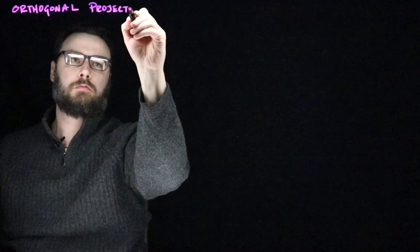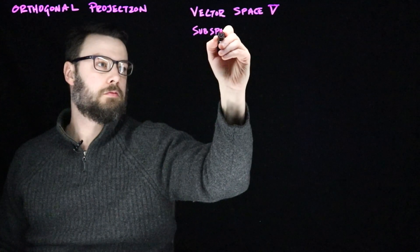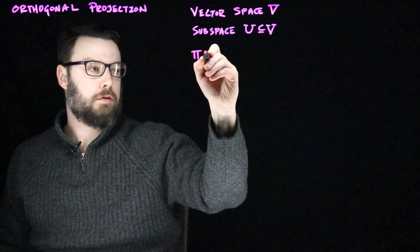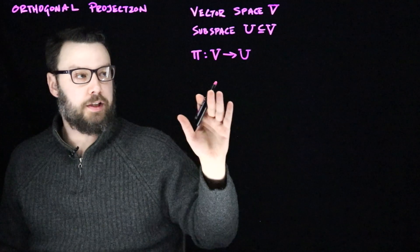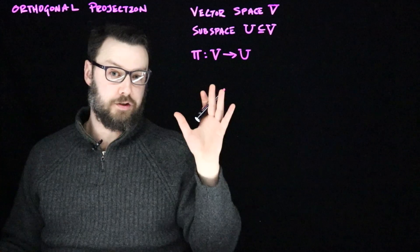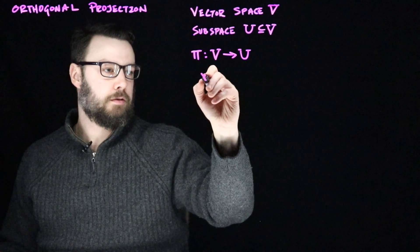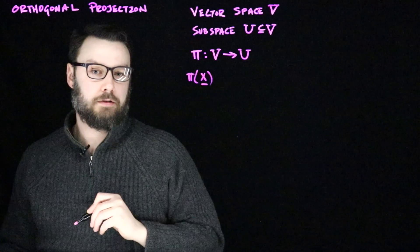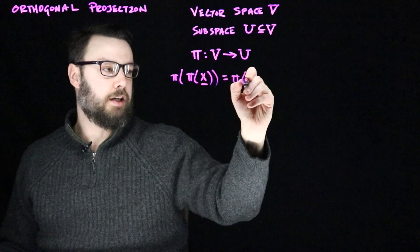Now let's talk about the idea of orthogonal projection. We imagine a vector space V and a subspace U, with a linear map pi that goes from V to U. It has the property that if I apply pi more than once it doesn't change anything — that's a projection. So if I take some X in V and hit it with pi, and then hit it again with pi, it needs to be the same as if I had only done it once.